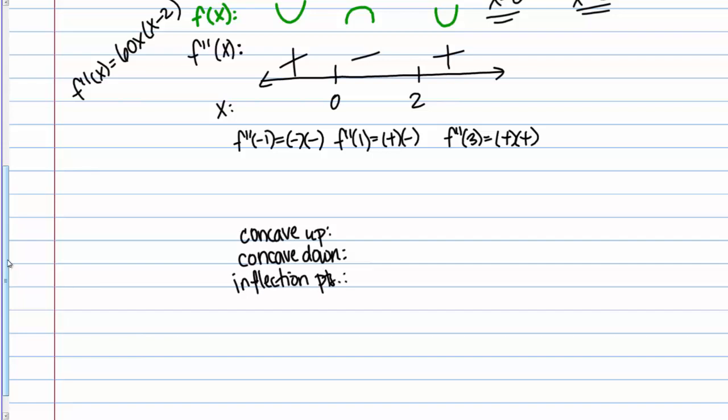It's concave up from negative infinity to 0, so numbers less than 0, in interval notation negative infinity to 0, and 2 to infinity. Both those intervals are places where it's concave up. Then it's concave down from 0 to 2.